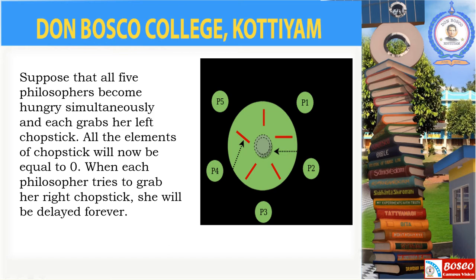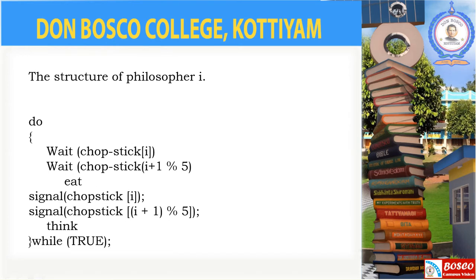This is the structure of the Dining Philosopher's Problem. The structure is in a do-while loop — that is, whether true or false, the process will be executed at least one time. First is wait of chopstick of i. The initial value is 1, meaning chopstick of i equals 1. It indicates that no process is in its critical section. Then the first chopstick is acquired.